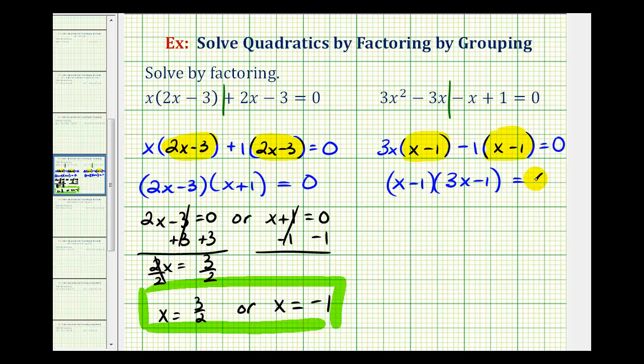And now this product is equal to zero. Therefore, the first factor of x minus 1 would equal zero or the second factor of 3x minus 1 would equal zero. And now we'll solve these two equations for x.